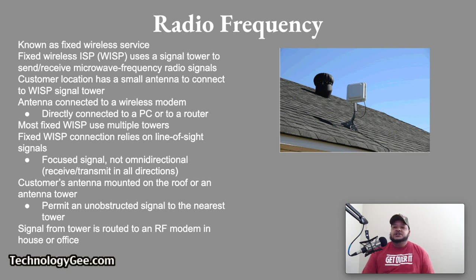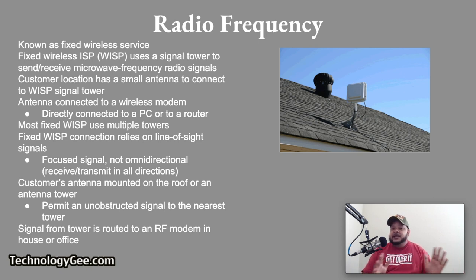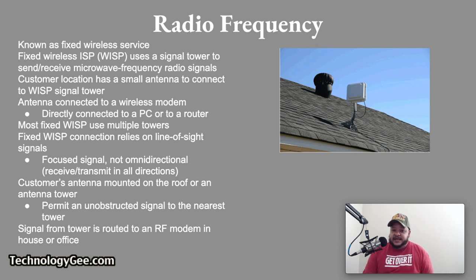What you're looking at here is a receiver on somebody's roof practicing what is called line of sight. That means there is a direct line of communication between the receiver and the RF tower, and there can't be any buildings, trees, or major objects blocking that signal. If there are obstructions, it will disrupt the communication signal and people won't be able to access the internet.